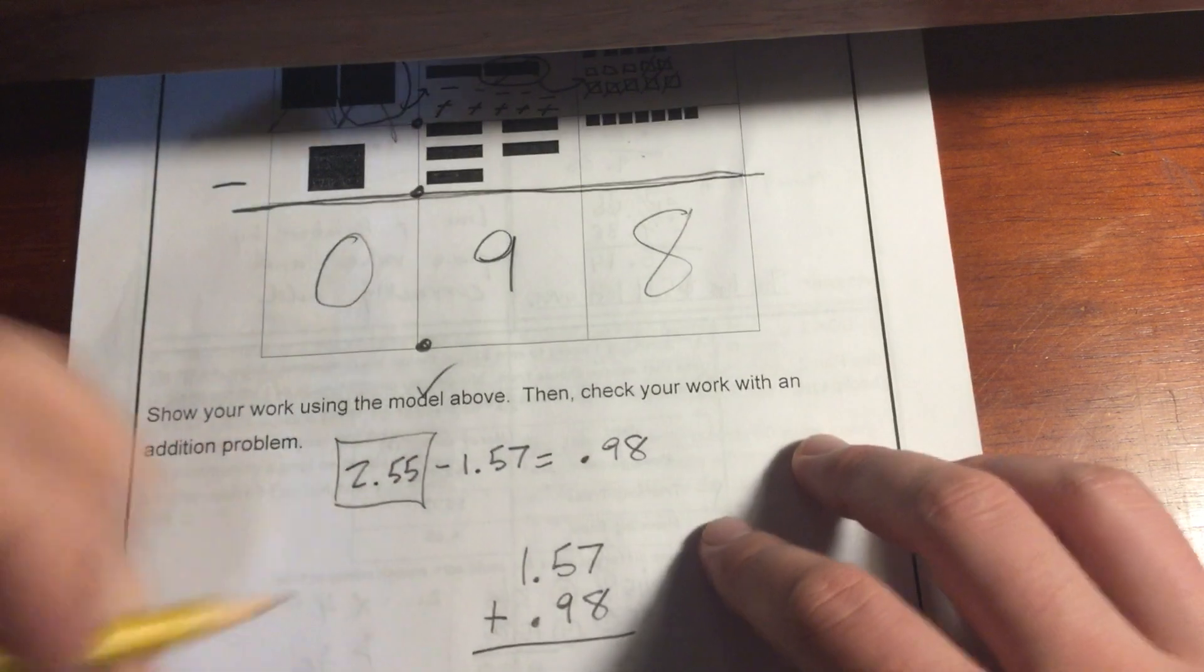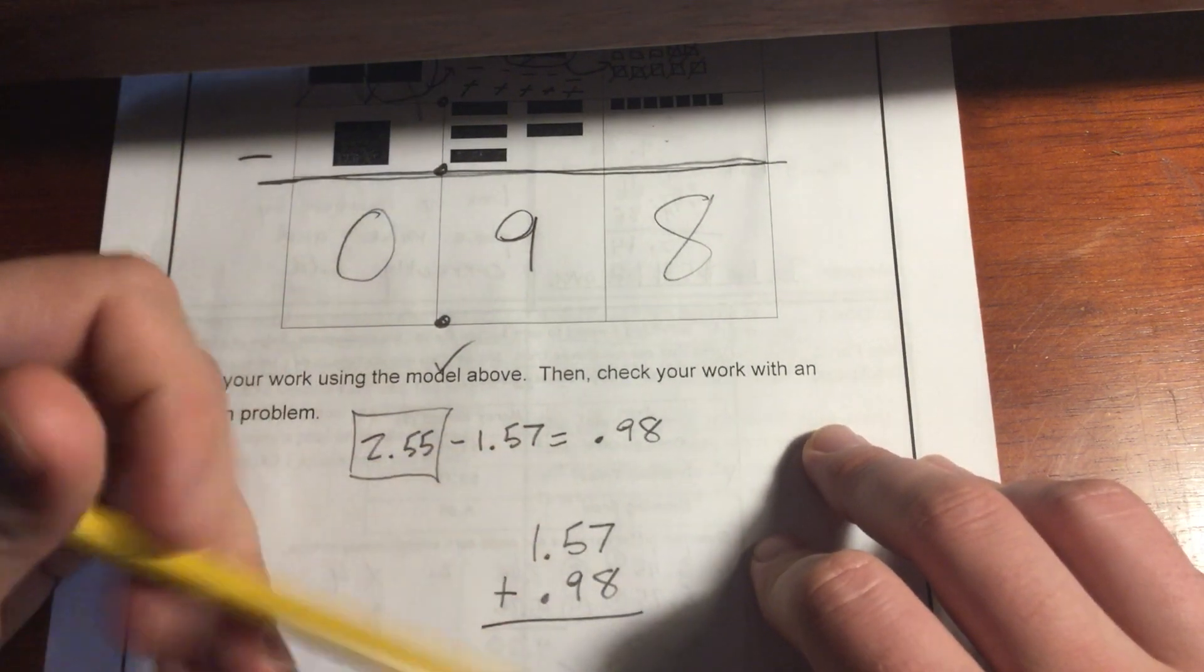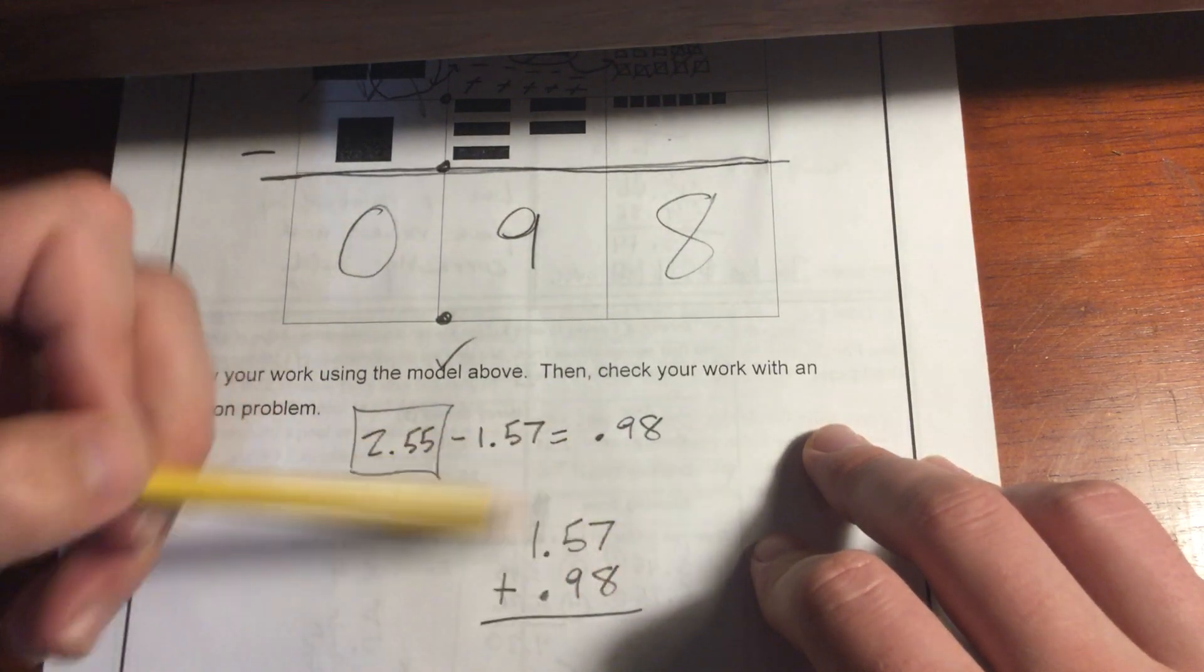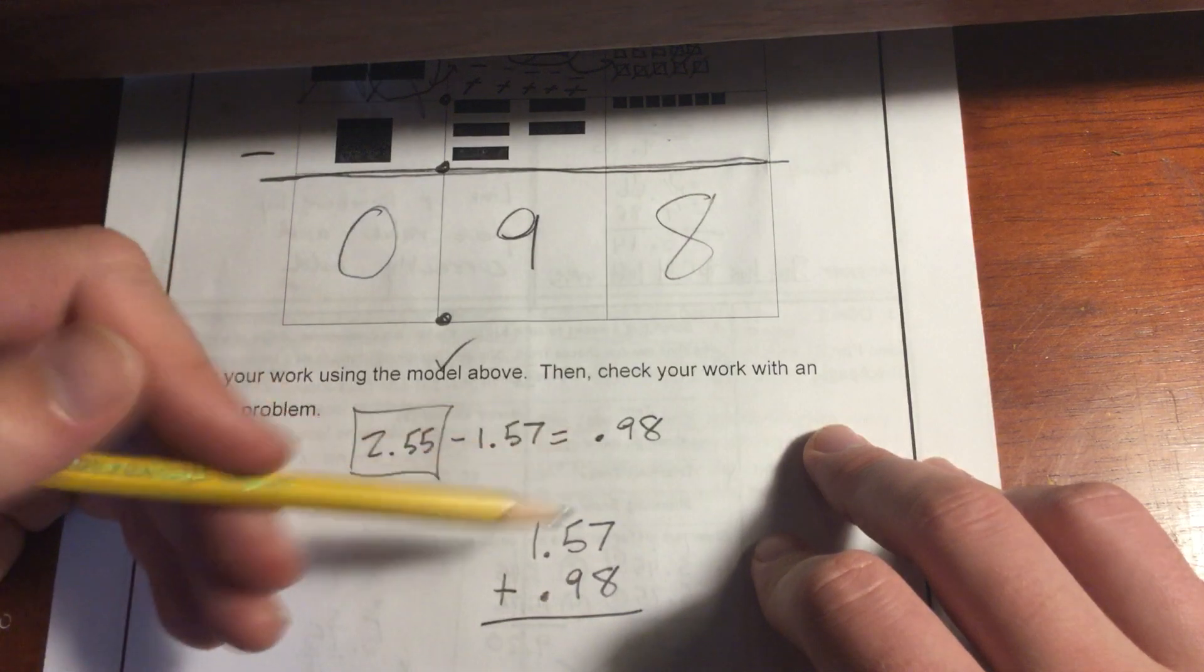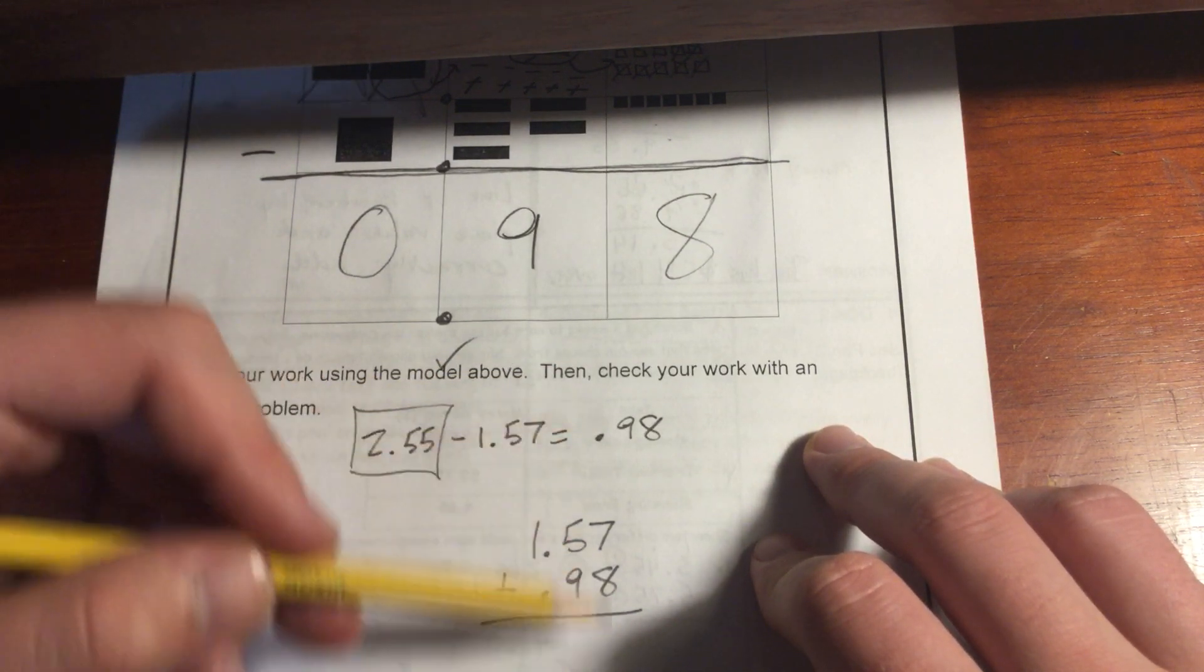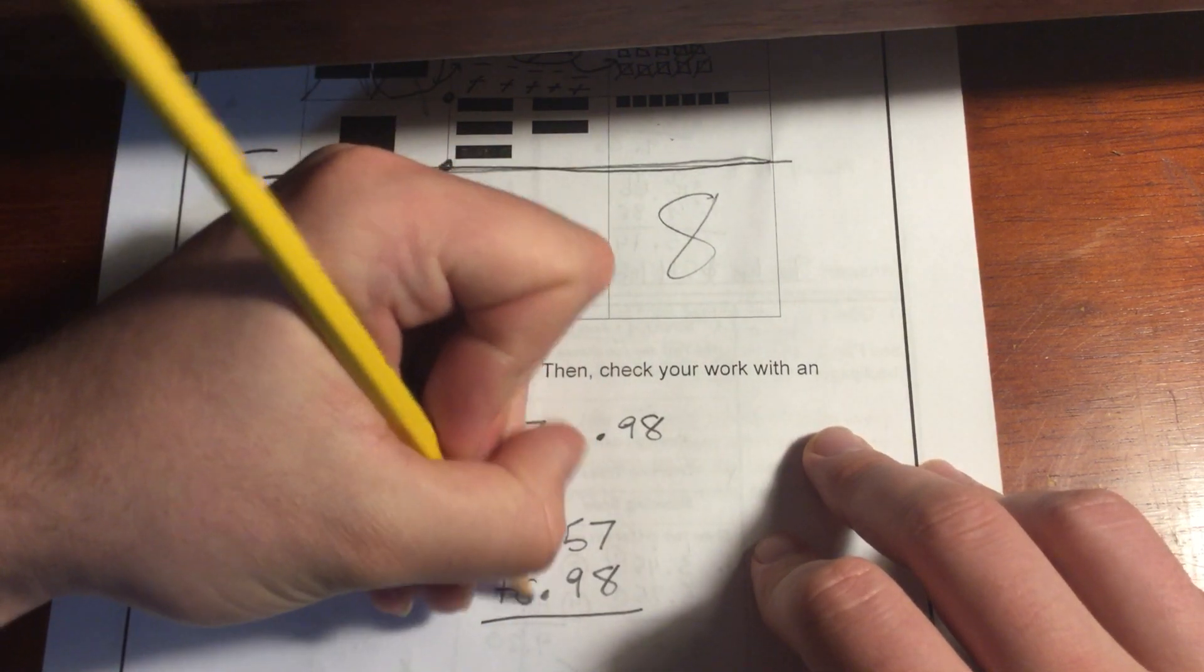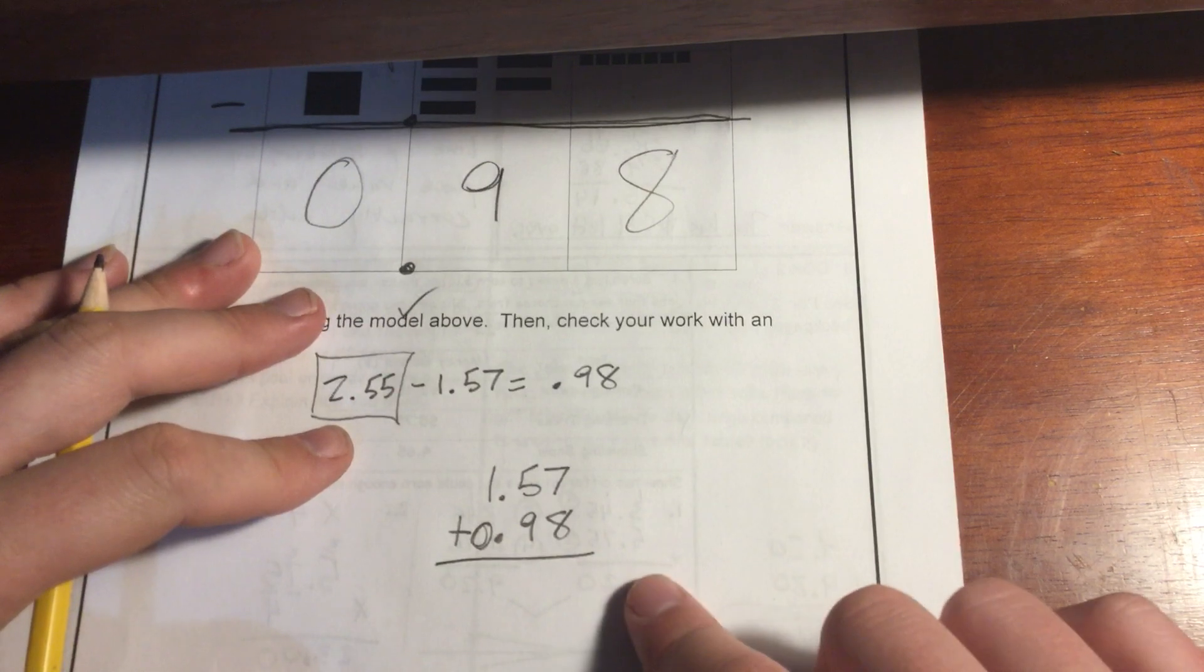1 and 57 hundredths plus 98 hundredths. Remember I'm lining up by place value. If you line up by place value, your decimal point will also be lined up. Remember we sometimes don't always have the same exact amount of digits in our numbers. So we are always thinking about place value instead of that decimal point. So tenths under tenths, hundredths under hundredths, ones lined up with ones. That's going to be a zero. And so now we're just going to get to it.